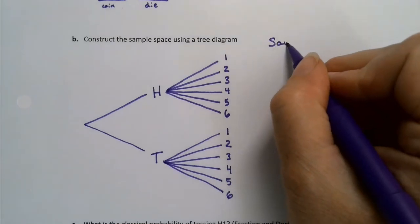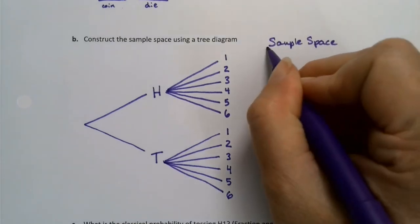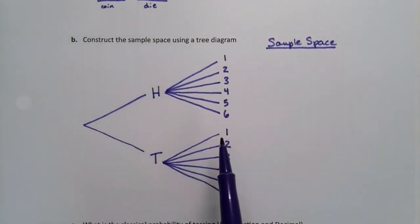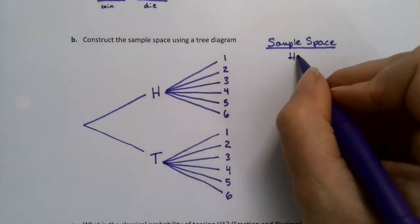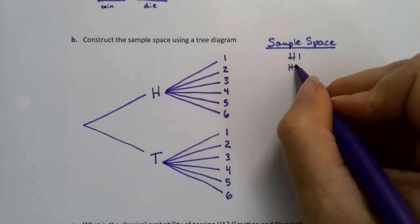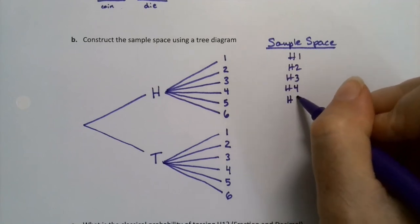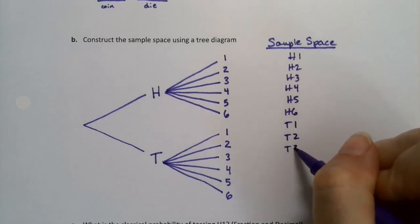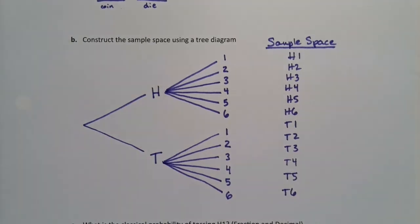All right, now the sample space has to be written, otherwise we don't get full credit. And that was what was actually asked to be found, the sample space. The tree diagram is just to help us find it. So to get to this one, we had to go H. So it's H1, H2, H3, and so on. And then all the T's, T4, T5, T6.